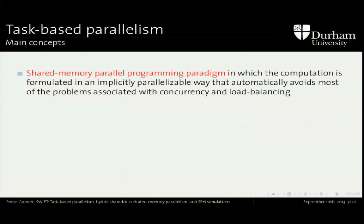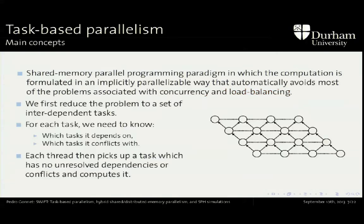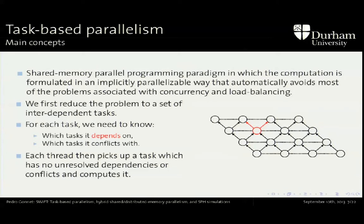A few people have already spoken about task-based parallelism — I'm going to speak about it too. It's a programming paradigm which forces you to write code in an implicitly parallelizable way, and in a way that avoids most of the typical concurrency problems in parallel parallelism. We take our whole computation and break it down into a number of tasks — these circles here. For every task, we keep track of two things: first, which tasks it depends on, meaning this task has to wait for those other tasks to finish before it can execute. The second thing — and this is new if you're familiar with task-based parallelism, nobody else does this — is task conflicts.